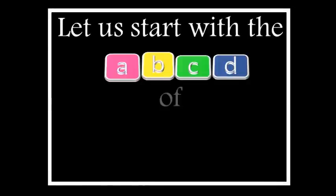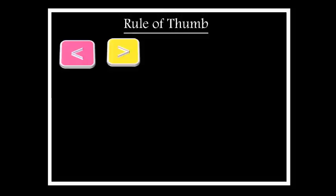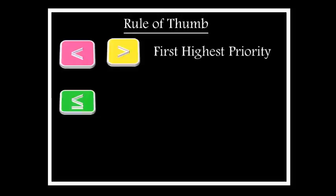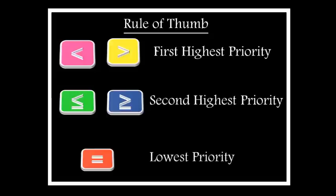Let's start with the ABCDs of mathematical inequalities. Here is the rule of thumb: less than and greater than both take the highest priority. Less than or equal to and greater than or equal to take the second highest priority. Finally, equal to has the lowest priority.